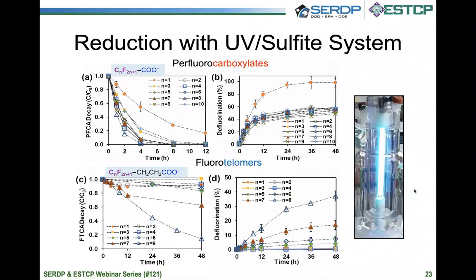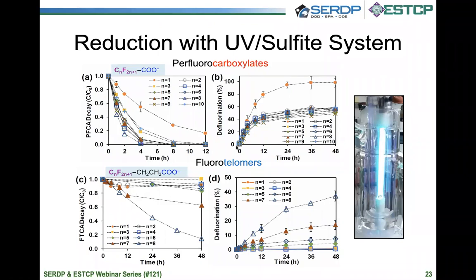We monitored the degradation of the parent compound. Panel A shows the degradation of the parent perfluorocarboxylic acids. The general feature is that these acids follow very similar degradation profiles, and the majority can achieve complete removal within 8 to 12 hours. Panel B describes the defluorination profile, which is defined as the ratio of released fluoride ions after treatment over the initial total fluorine contained in the parent PFAS compound. The defluorination ratio for perfluorocarboxylic acids for most structures is around 55%.